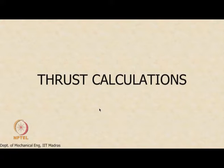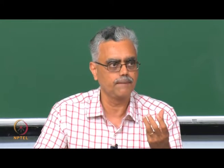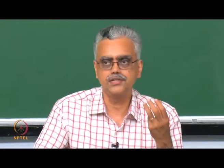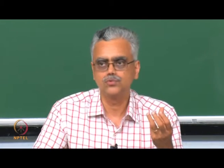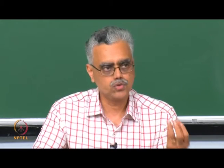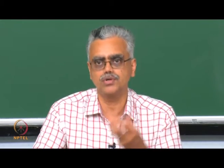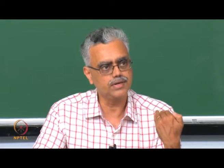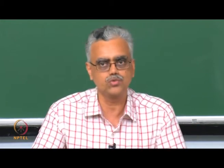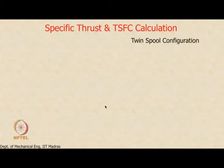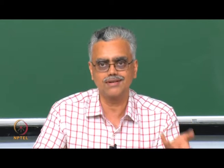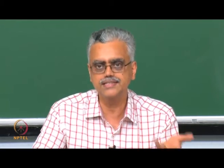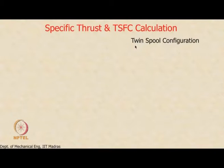We will do thrust calculations for a twin spool engine. There is no loss of generality in assuming a twin spool configuration. The procedure is very general: setting B equal to zero gives the turbojet equation; setting B equal to zero with fan pressure ratio equal to 1 gives a turbojet; additionally setting compressor pressure ratio to 1 recovers the ramjet.